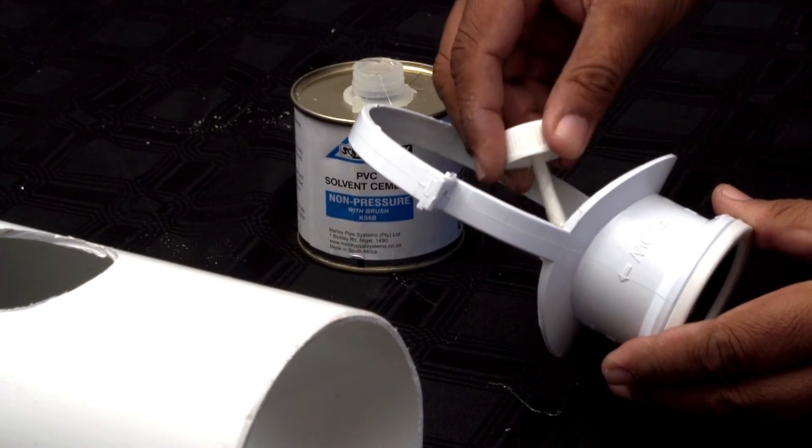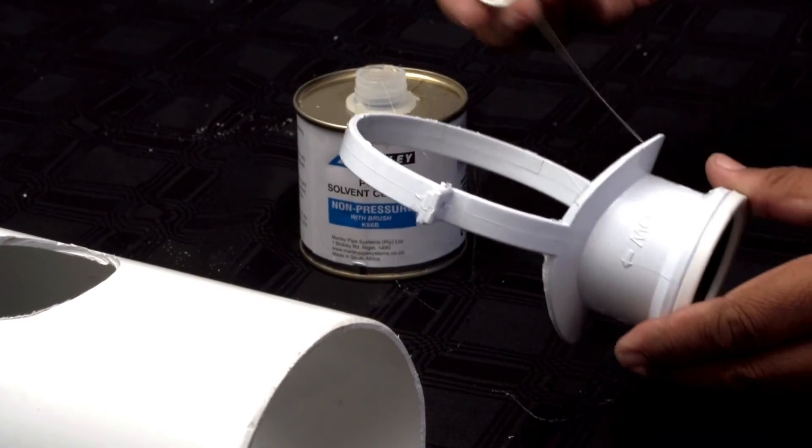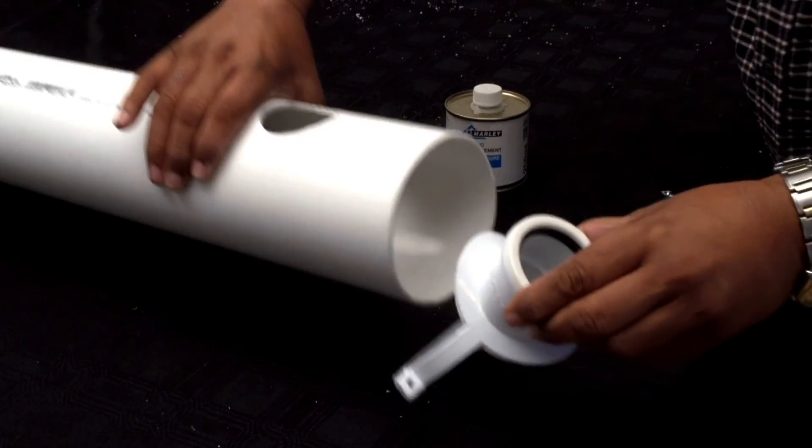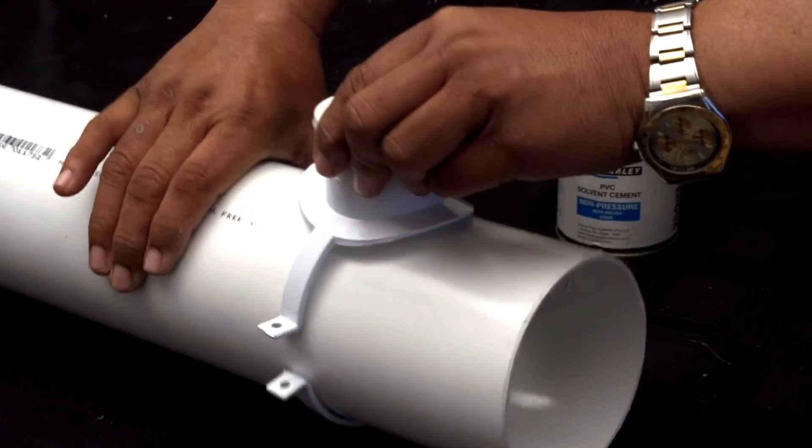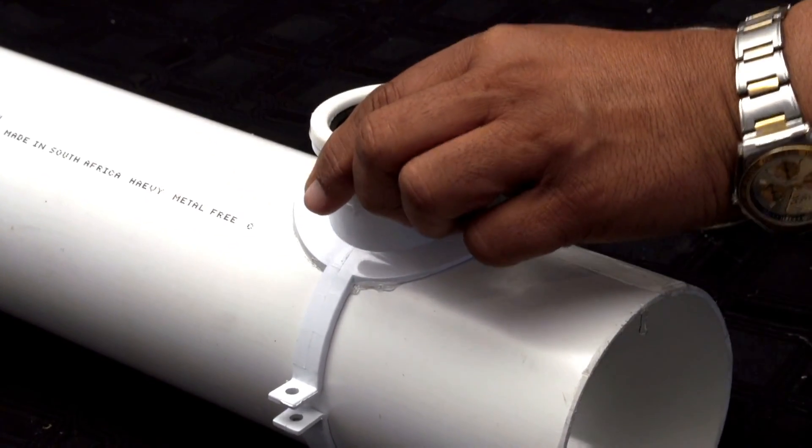Apply a uniform coat of Marley solvent cement to the saddle flange and to the area on the main pipeline surrounding the drilled hole as marked. Secure the saddle strap in the original position as marked using the supplied M5 screw.